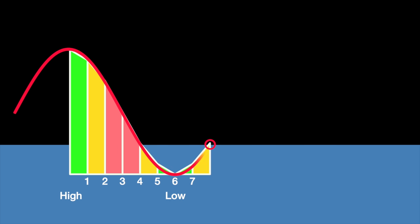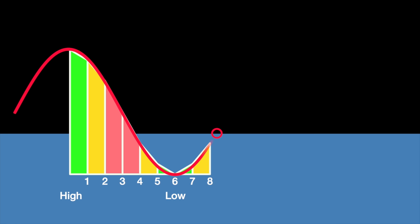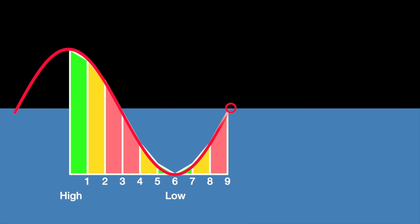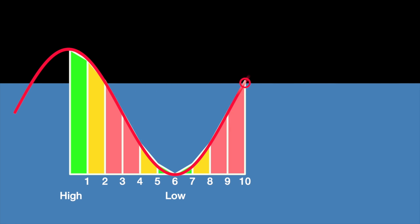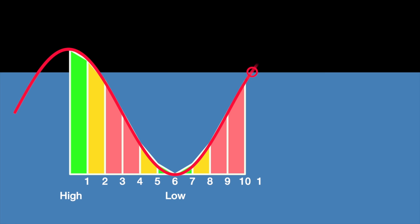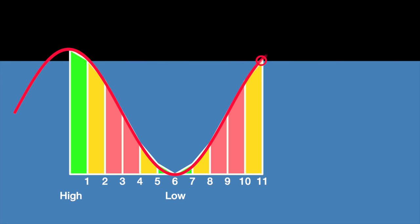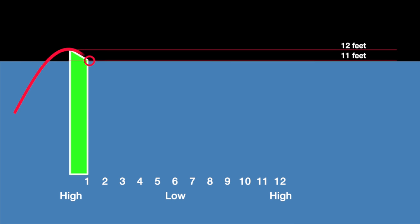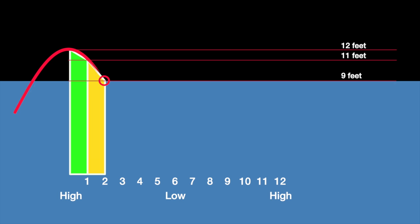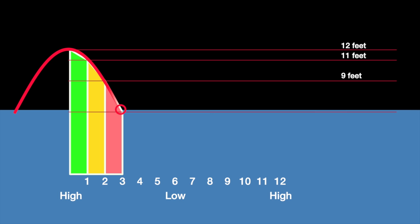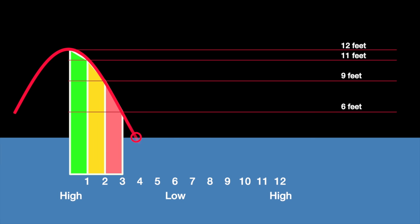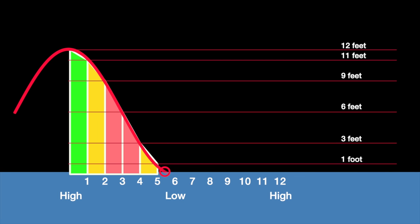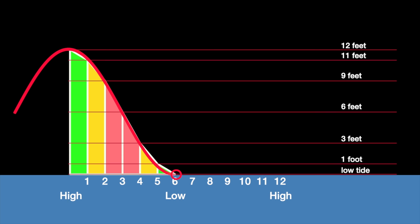This simple rule will give you a pretty good approximation by dividing the tide difference from high to low into 12 increments. For example, if the tide table shows a range of 12 feet, then it would fall by one foot, then two feet, then three feet, then three feet again, then two feet, and finally one foot before hitting low.